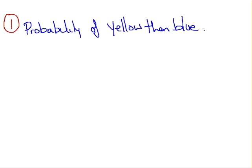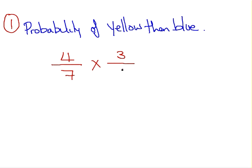We're going to compute the probability of yellow then blue. In the first instance, there are four yellow balls out of seven to be selected, so that's four out of seven. The second part is that there are six balls left over, and three of them are blue and three of them are yellow — so three blue out of six. The answer to event one is simply to multiply out those two terms, and we get an answer of two over seven.